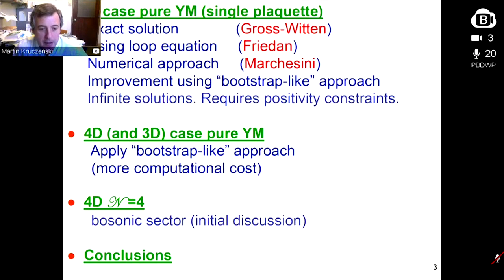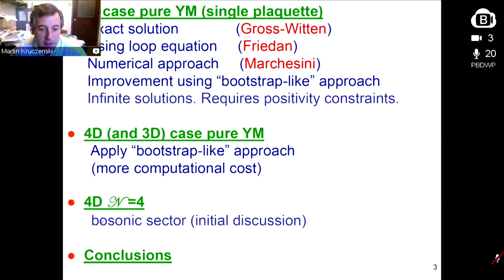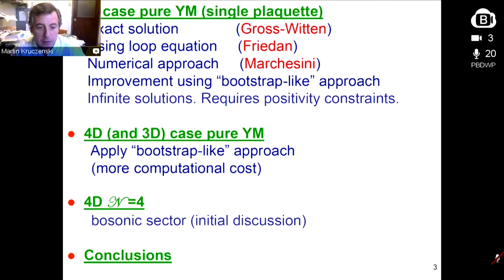Marchesini implemented a general numerical approach to solve the loop equation in any dimension and tested it in two dimensions. As we're going to see, it has problems with weak coupling, and that's where we try to improve using this bootstrap-like approach. The main problem is that at weak coupling, there is an infinite number of solutions, and you need to distinguish which is the correct one. For that, we need to impose these positivity constraints. Then we go to four dimensions and apply the same there, although it's much more computationally costly.